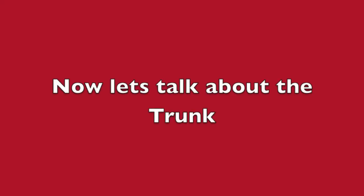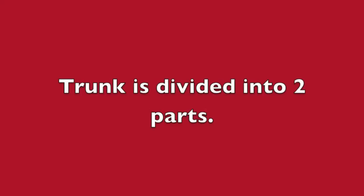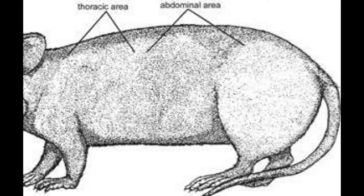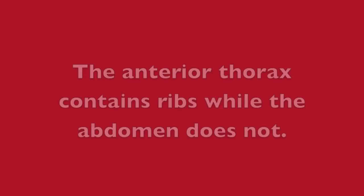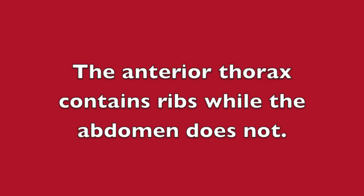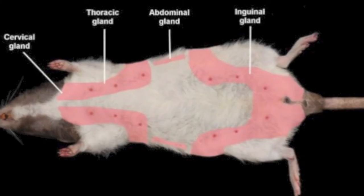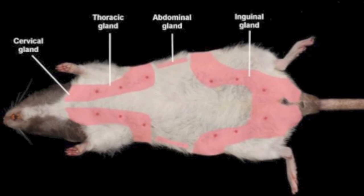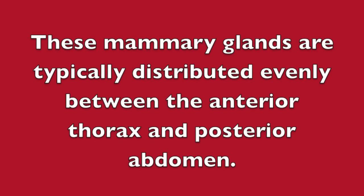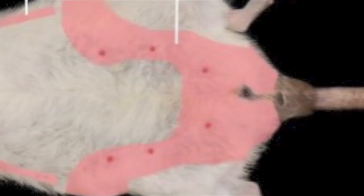Now let's talk about the trunk. The trunk is divided into two different parts: the anterior thorax and the posterior abdomen. The anterior thorax contains ribs while the abdomen does not. The rat has 12 teats, nipples, or mammary glands. These mammary glands are typically distributed evenly — six on the thorax and six on the abdomen.